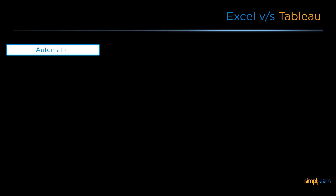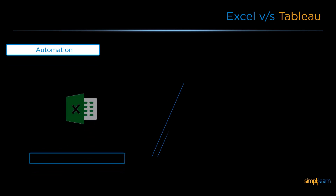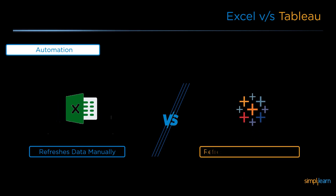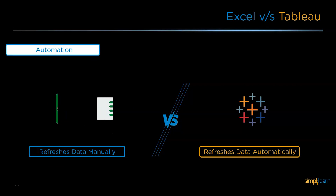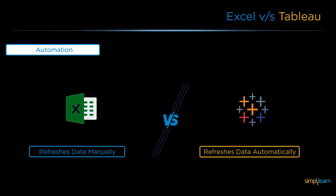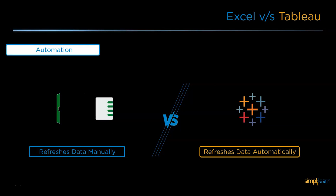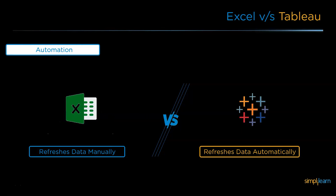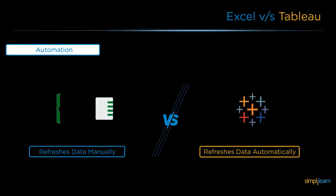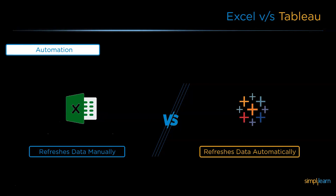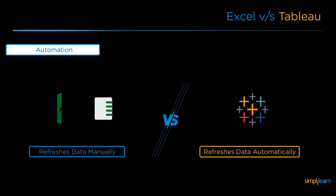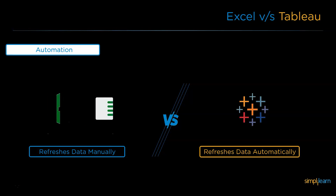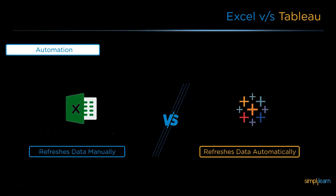The next difference is related to automation. Automation is something which doesn't require human interaction with data. When it comes to Excel, the data refreshment — whatever changes you make to the data — if you want those changes to be implemented, you need to manually refresh it. But when it comes to Tableau, Tableau will automatically take care of all the data changes that you have implemented.